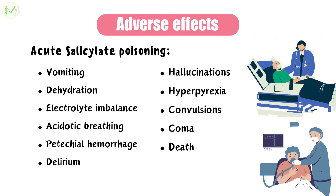Acute salicylate poisoning is another serious adverse effect in children when dosage exceeds more than 10 grams. It manifests with vomiting, dehydration, electrolyte imbalance, acidotic breathing, hyper- or hypoglycemia, petechial hemorrhages, restlessness, delirium, hallucinations, hyperpyrexia, convulsions, coma, and death due to respiratory failure along with cardiovascular collapse.